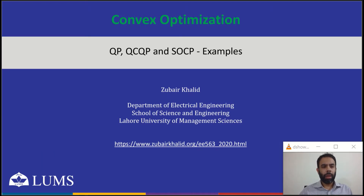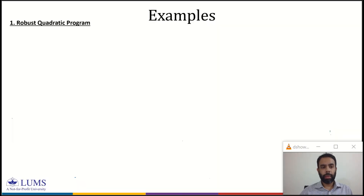Bismillahirrahmanirrahim. Welcome to another module of the convex optimization course. In this module we will review some examples related to QP, QCQP, and SOCP. Let's look at the first problem: the robust quadratic program.